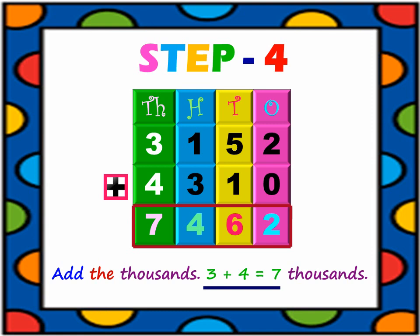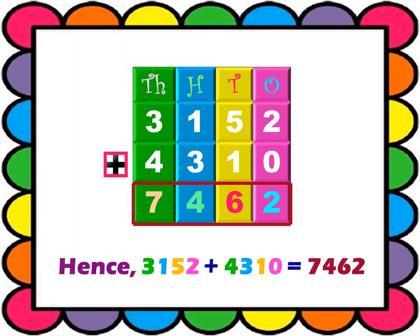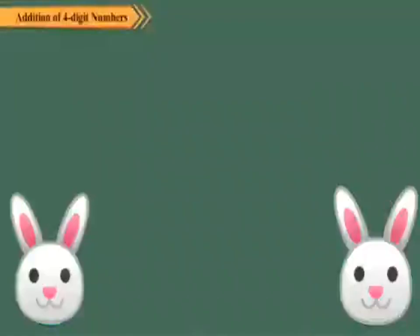Step 4: Add the thousands column. The digit in the thousands column of 3152 is 3, and of 4310 is 4. So, 3000 plus 4000 equals 7000. Hence, when we add 3152 and 4310, we get the sum as 7462.